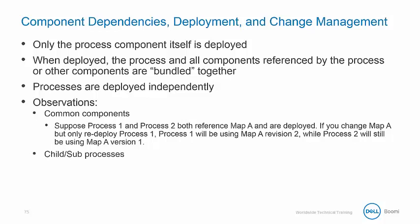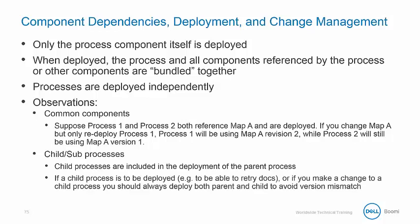Let's examine how this works with a child or subprocess. Child processes are included in the deployment of the parent process. If you deploy the child process — perhaps to retry documents — it is a best practice to deploy both the parent and the child process to avoid version mismatch.